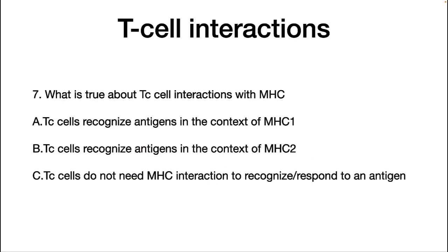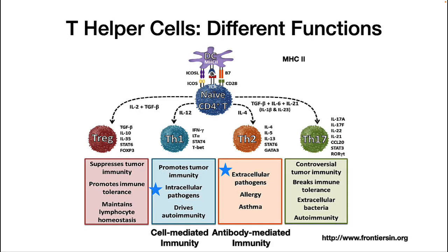So, a quick concept check: what is true about cytotoxic T cell interactions with the MHC? To summarize T cells, they have different functions. Cytotoxic T cells kill infected cells as described. T helper cells come in a variety of types — we talked about Th1, which directs cell-mediated immunity, and Th2, which directs antibody production. There are a lot more details about the immune system we didn't cover; if you are interested, there are whole courses on immunology.